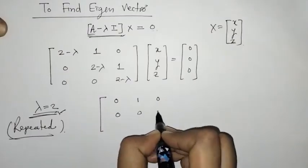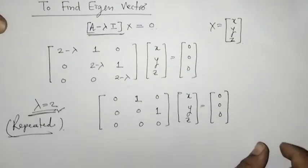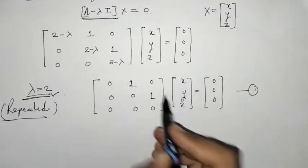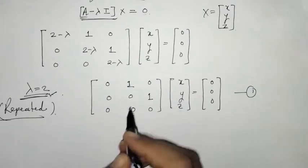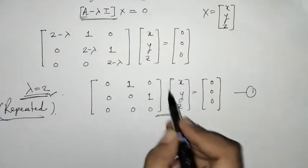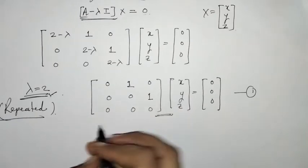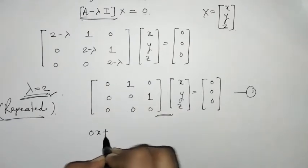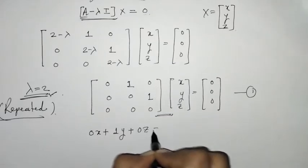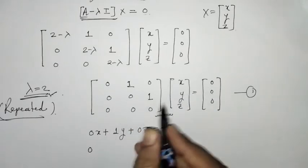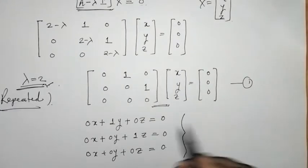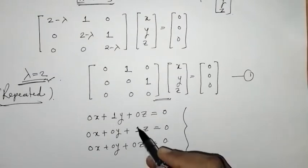We put lambda equals 2 into the matrix equation. After substituting, we simplify this matrix equation to get a system of simultaneous equations. Performing matrix multiplication, we get: 0x plus 1y plus 0z equals 0, and 0x plus 0z equals 0. We now have the system of equations.